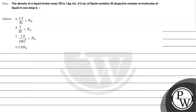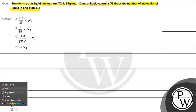Hello students, let's read this question. The question says: density of a liquid with molar mass 70 is 1.2 gram per milliliter. If 2 ml of liquid contains 35 drops, the number of molecules of liquid in one drop is? Options are given to us.